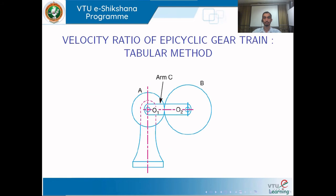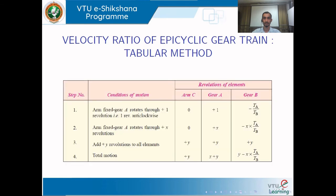For finding the velocity ratio of an epicyclic gear train, we have two methods: the tabular method and the analytical method. For simple, compound, or reverted gear trains, finding the velocity ratio was straightforward. For epicyclic gear trains it is slightly different. We will see how to find the velocity ratio using the tabular method. The arrangement has three elements: gear A, the arm, and gear B, which will be written in the form of a table.